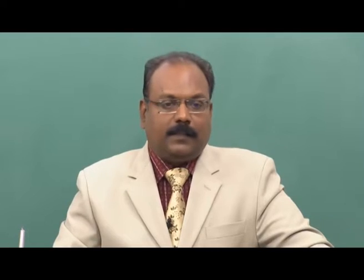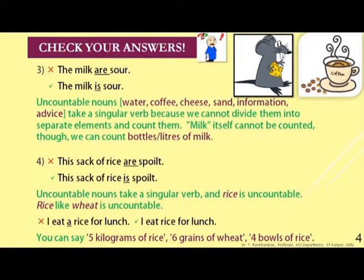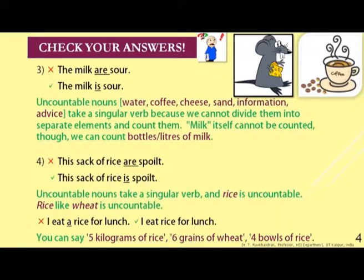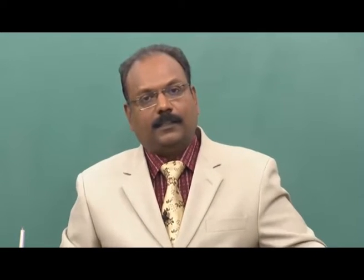Similarly, 'This sack of rice or spoiled' is wrong. The correct form is 'This sack of rice is spoiled.' Rice, like wheat, is uncountable, so it is wrong to say 'I eat a rice for lunch.' The correct form is 'I eat rice for lunch.' If you want to indicate quantity, you say '5 kilograms of rice', '6 grains of wheat', or '4 bowls of rice.' When used as an uncountable noun in a general sense, it takes a singular verb.